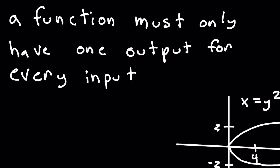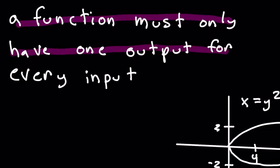Now that you know what the vertical line test is, I want you to get a fundamental understanding of how it works. In order to do this, we need to know the basic rules of functions. In order for something to be a function, the function must only have one output for every single input.